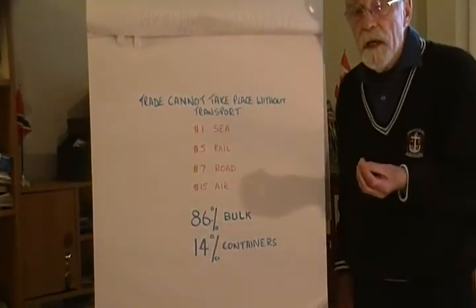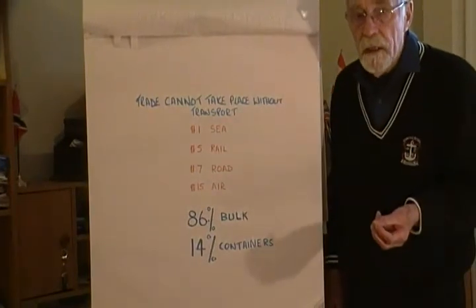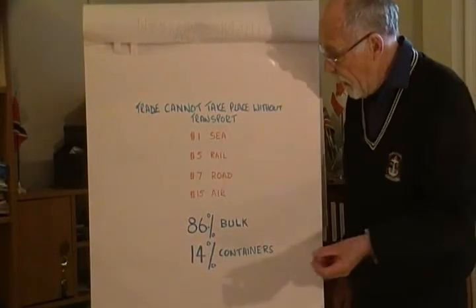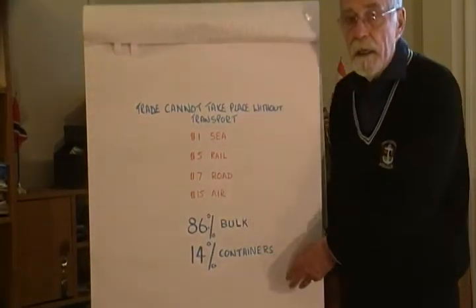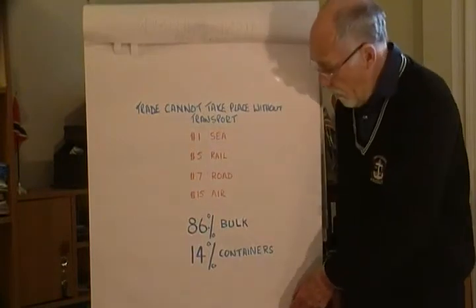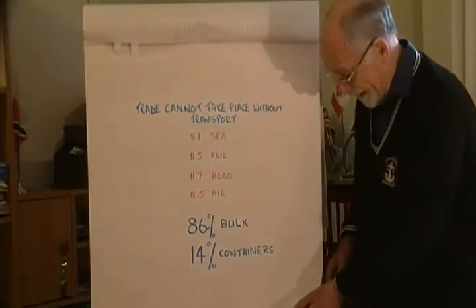Of maritime transport that carries most of the international trade, 86% is bulk cargo and 14% is containers.